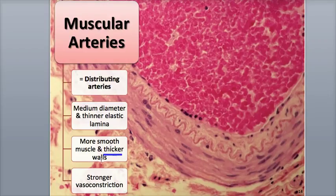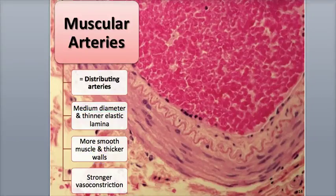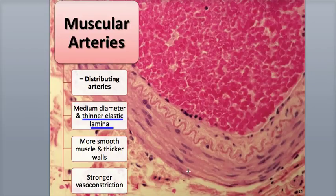Muscular arteries are thicker-walled arteries with a medium-sized diameter, having a tunica media with large quantities of smooth muscle fibers but fewer elastic fibers compared to elastic arteries. They range in size from the diameter of a pencil to as narrow as a string, with their thicker wall making up about one-quarter of their diameter. They have a thicker internal elastic lamina but a thinner external elastic lamina, which limits their ability to recoil.